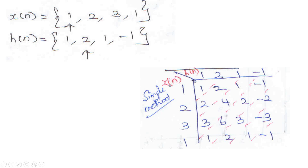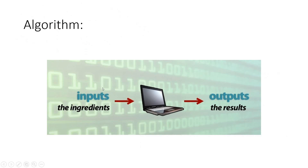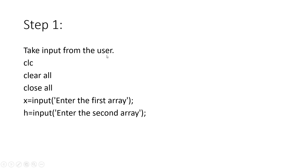Now, what is the algorithm for this particular program? Let us go through it. Step one: take the input from the user. Write clc, clear all, close all. Then x = input('enter the first array'), h = input('enter the second array'). x is our main signal or discrete sequence, and h is our system response. In this video I am going to show you how we can generate the convolution sequence — plotting will be covered in the next video.